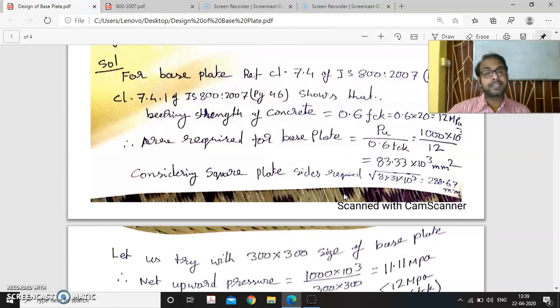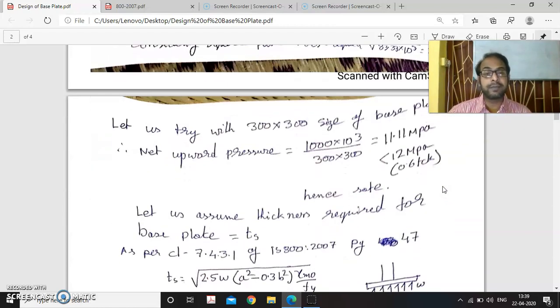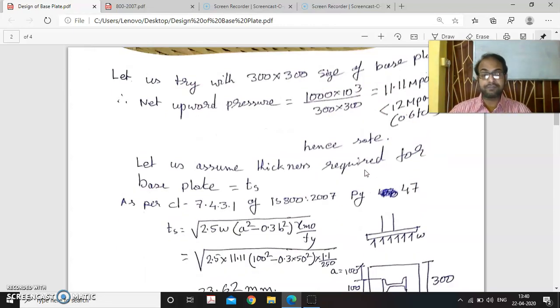Considering the base plate will be square, we have made a square root to find out the sides. We have found that the side required is 288.67. We have rounded it up and tried with 300 by 300 size of base plate. Now the upward bearing pressure is checked, which is coming as 11.11 MPa, while dividing by the area. So it is less than this permissible bearing pressure, so it is safe.